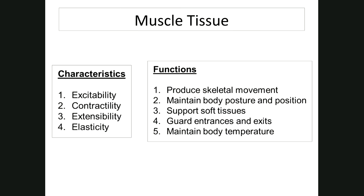Number five, maintain body temperature. Muscle movement breaks down ATP, which releases energy, most of which is in the form of heat. ATP is the energy molecule of the cell — your body constantly builds it up and uses it. When the phosphate is removed from ATP to make ADP, energy is released.